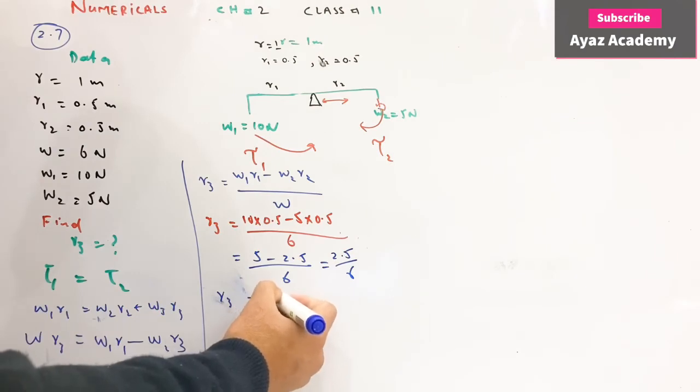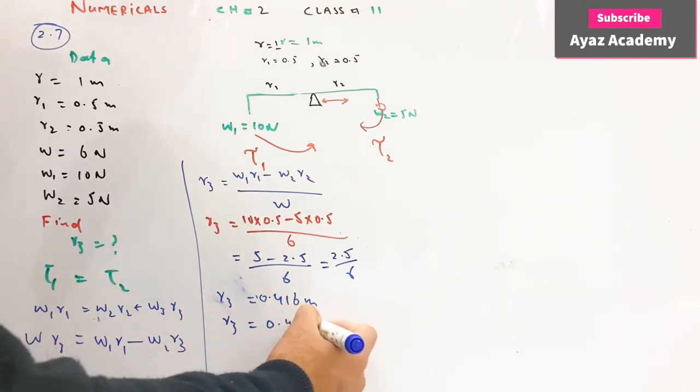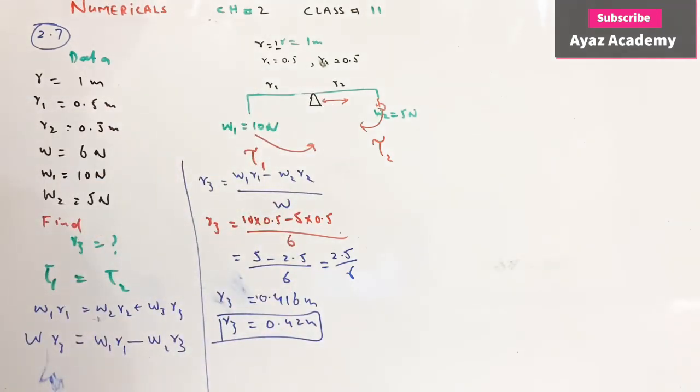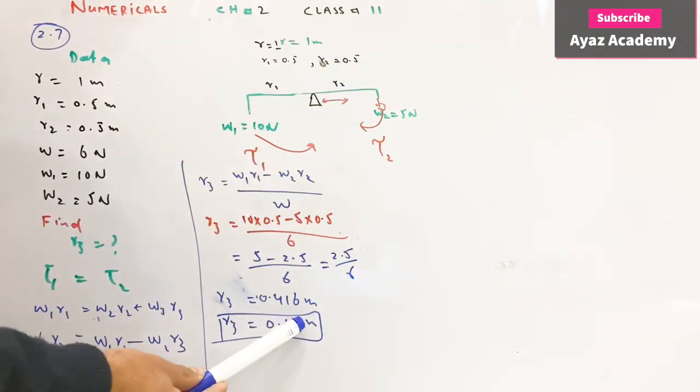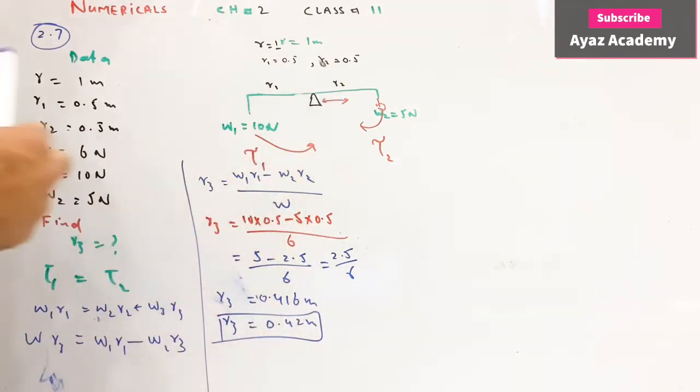0.416 meter, yeh rod round up kar ke ho jayega 0.42 meter. R3 position yaha pe, zero point four two meter pe yeh balance ho jayega.